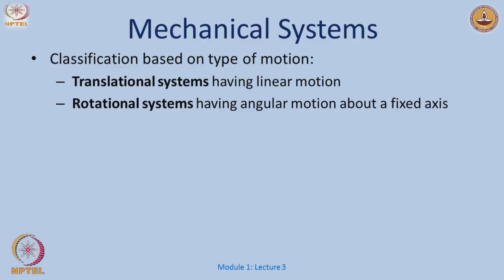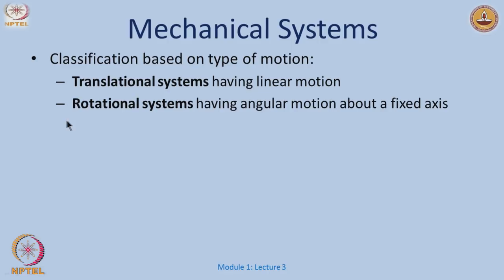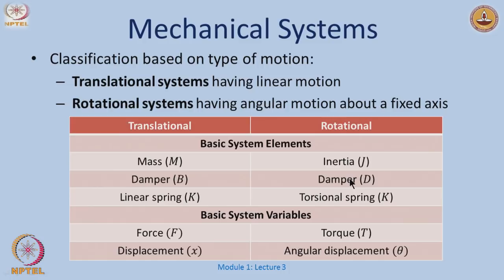Now moving to mechanical systems, which we learn even earlier — in high school physics. Motion can be classified as either translational (linear motion) or rotational (angular motion about a fixed axis). For translational motion, the basic system variables are a force causing a displacement. For rotational motion, a torque produces an angular displacement. The basic building elements are mass (kinetic energy), spring (potential energy), and damper (losses or friction), with their rotational equivalents being moment of inertia, torsional spring, and rotational damper.